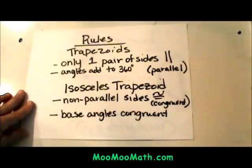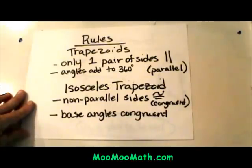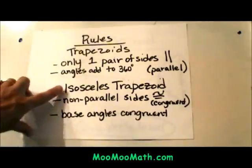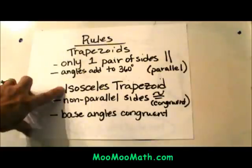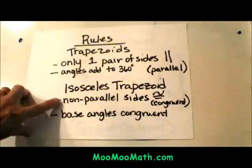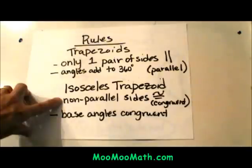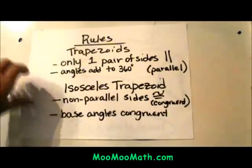The angles in a trapezoid always add to 360 because it is a quadrilateral and all quadrilateral angles add to 360. Now under trapezoid you can have a special trapezoid called an isosceles. Just like an isosceles triangle, an isosceles trapezoid has two congruent sides. So the non-parallel sides are congruent and then the base angles would be congruent.